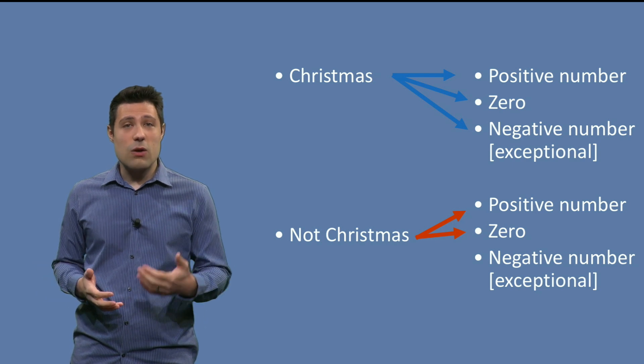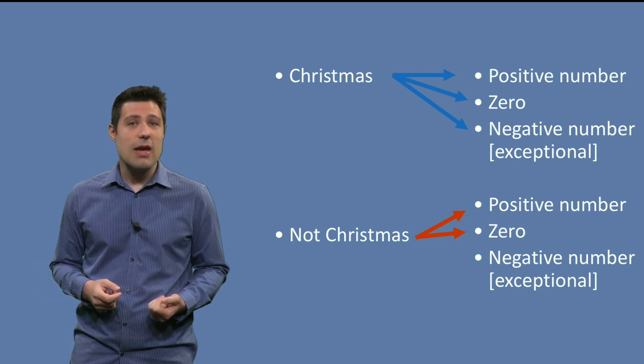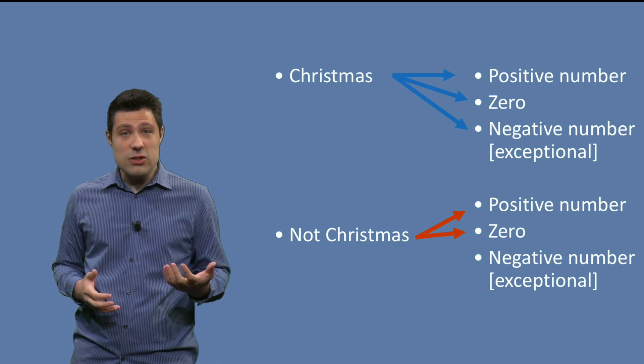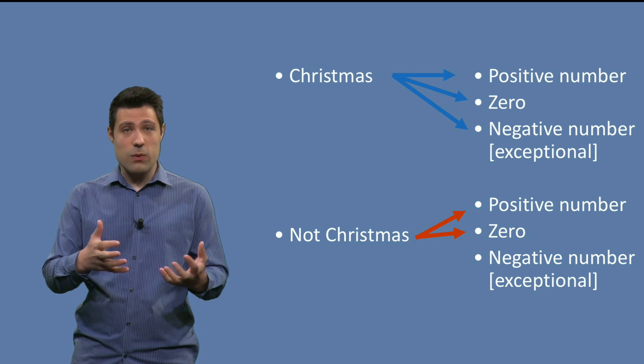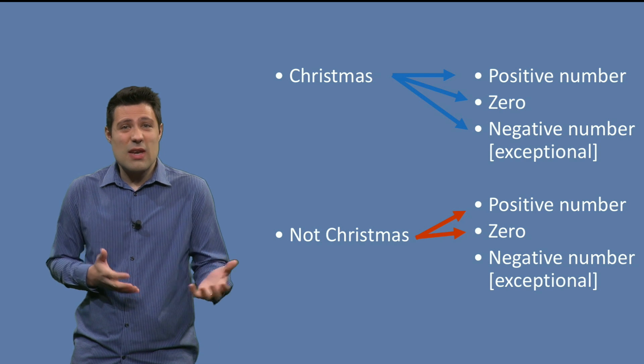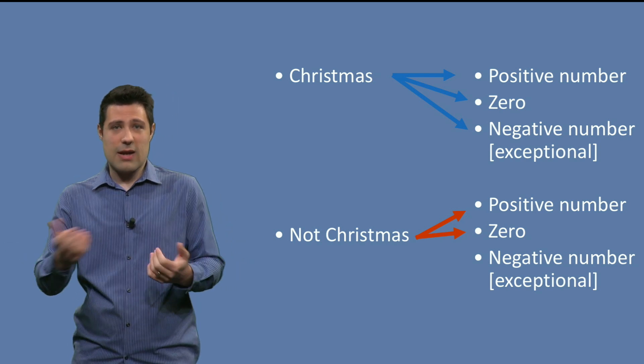That is why we add constraints, so that we can reduce the combinations. In this example, the negative number was the exceptional case. Let's then just test it once and not combine it with the others. For example, Christmas negative number we test, but we don't test not Christmas and negative number.